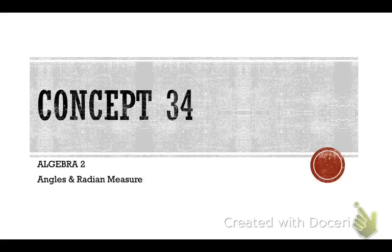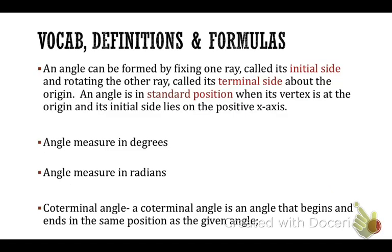Algebra 2, Concept 34: Angles and Radian Measure. Get down some vocabulary definitions and formulas. You can see that you have some fill-in-the-blanks, so you're going to fill in where you see the red words.